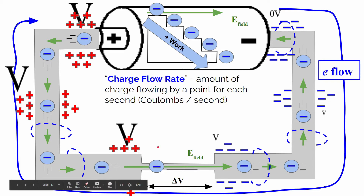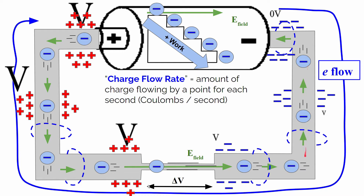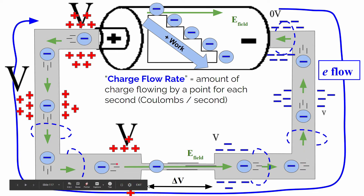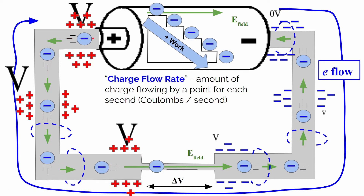Our microscopic explanation involved the fact that negative charges, where there's a concentration of electrons, end up flowing through our conductive pathway, through the light bulb, lighting it up and producing heat and light, and making it to the positive side of the battery, where there's a high electric potential.